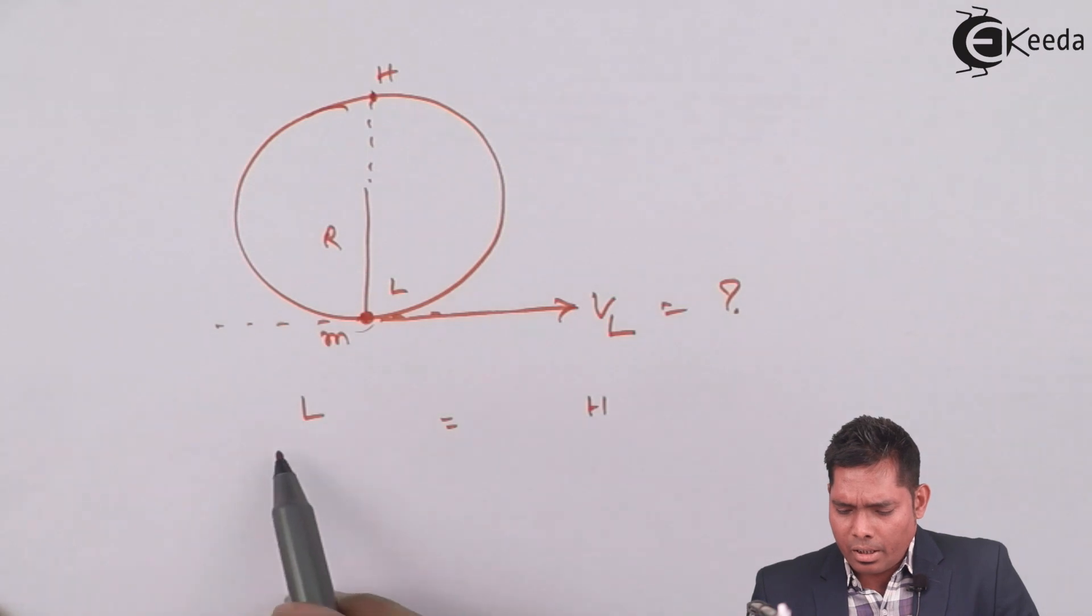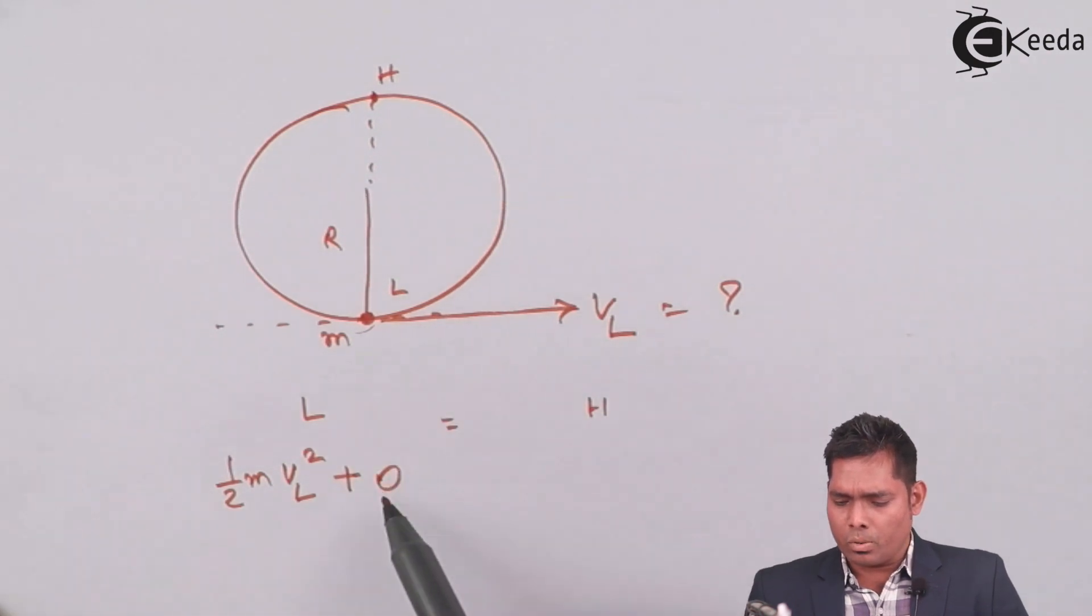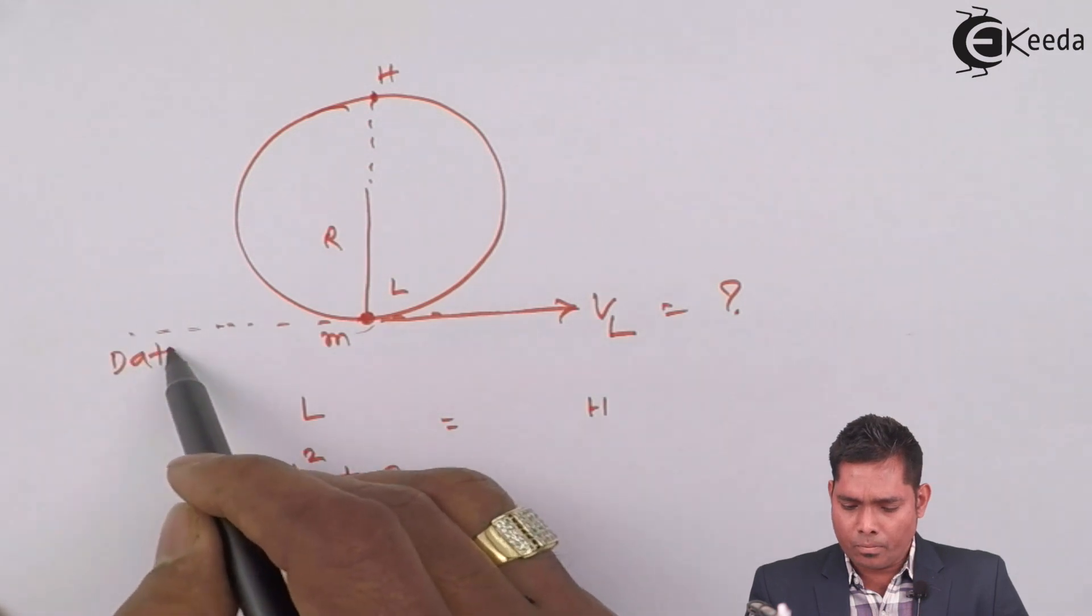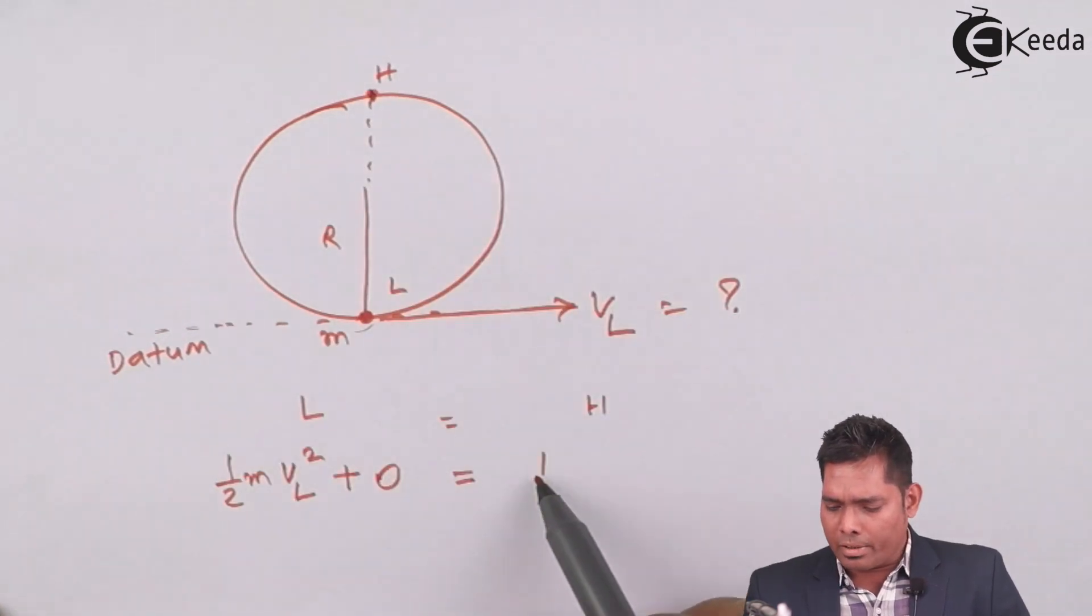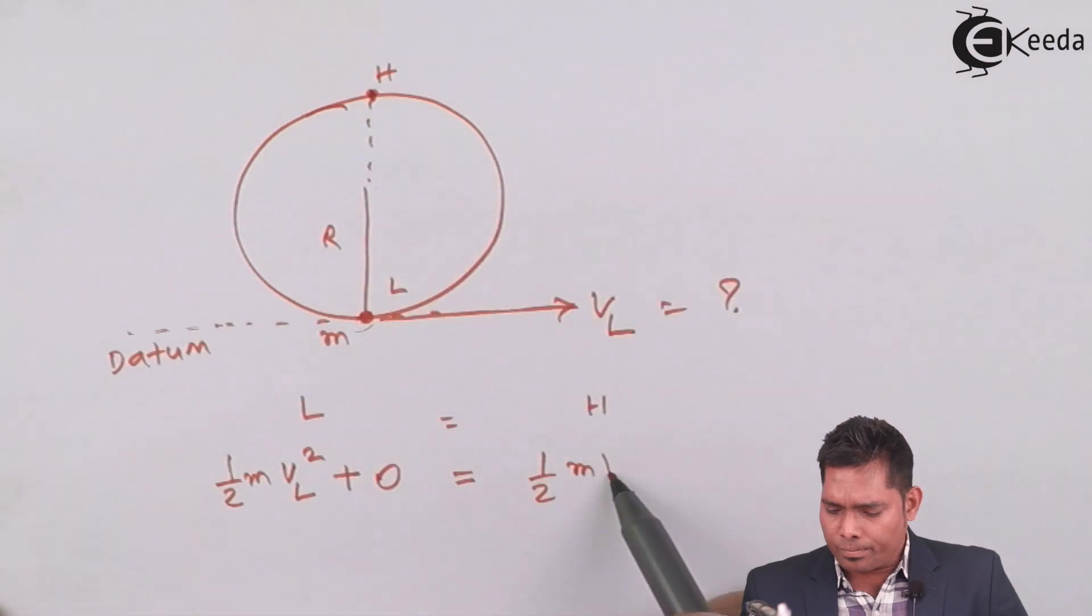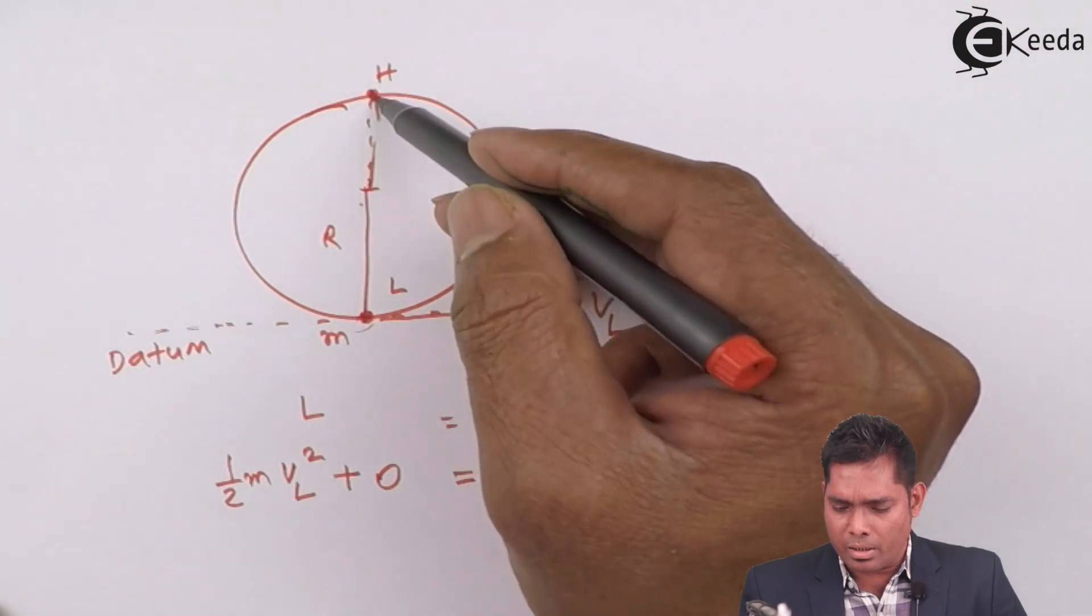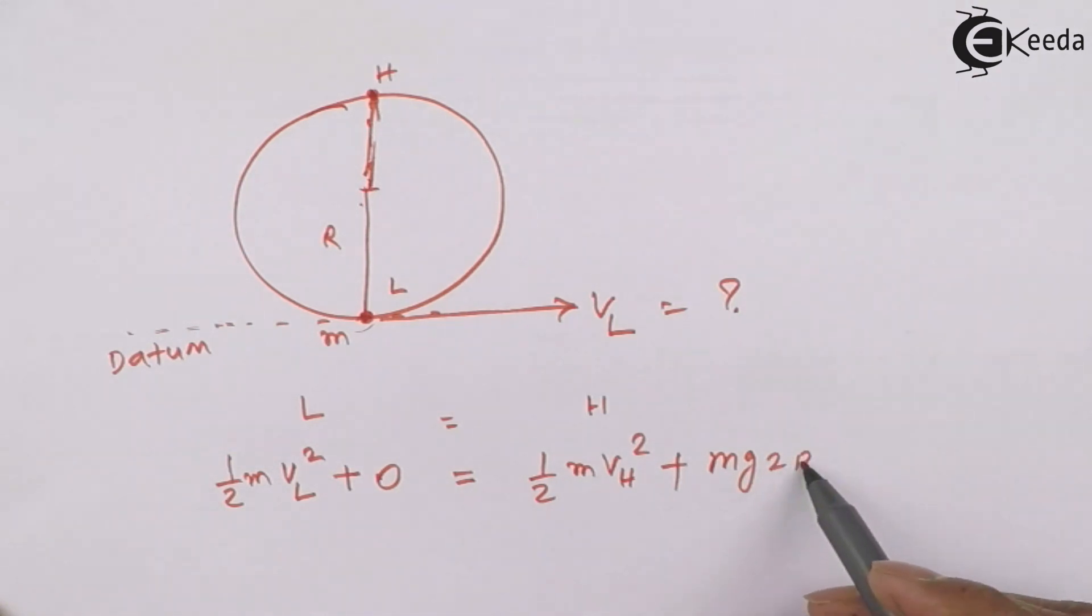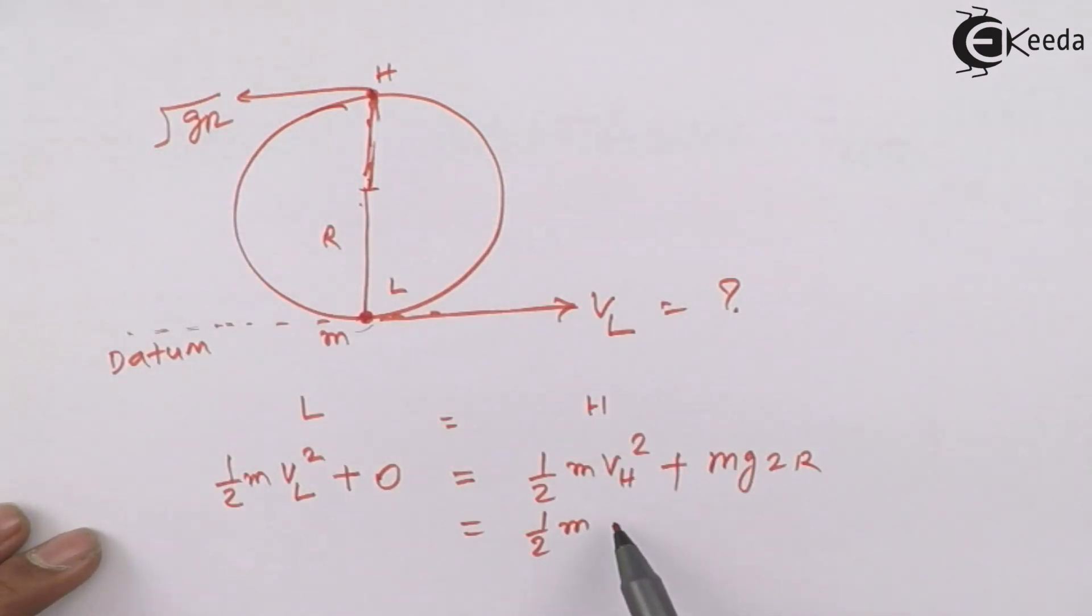The lowest point energy is kinetic, which is (1/2)M*VL². The kinetic energy part plus the potential energy being zero at the zero level. This is called the datum. So, zero level equals to highest point. The kinetic energy is (1/2)M*VH² plus the potential energy with this datum. This is the height is 2R. R plus R. This is 2R. So, it is M*G*2R.